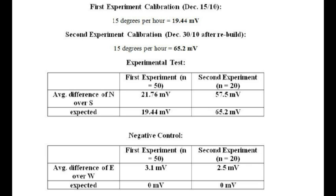Essentially, we were expecting a difference of around 19.44 millivolts in the first experiment for our full rotation. And we got 21.76. And for the second experiment, we were expecting about 65 millivolts and we got 57.5. So we're pretty close to the expected values.